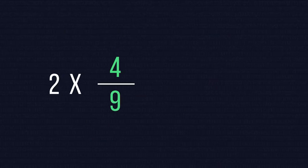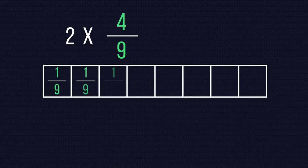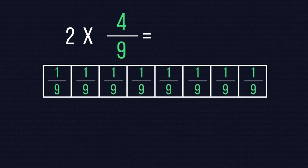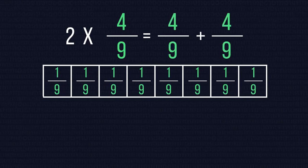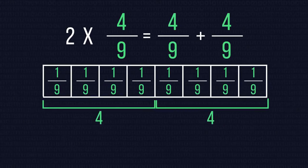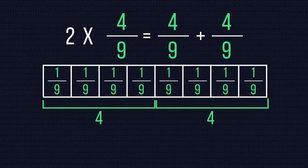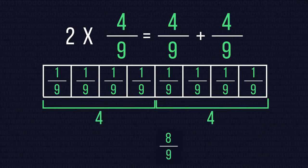Consider 2 times 4 ninths. Because basic multiplication is the same as repeated addition, this is the same as 4 ninths plus 4 ninths. From the diagram we can see that this gives us the fraction 8 over 9 because we have 8 ninths.